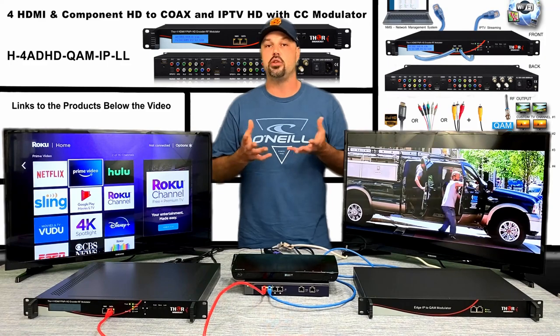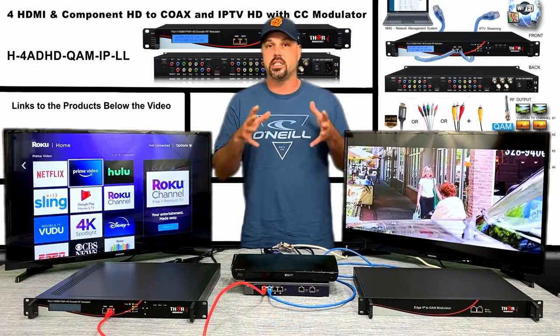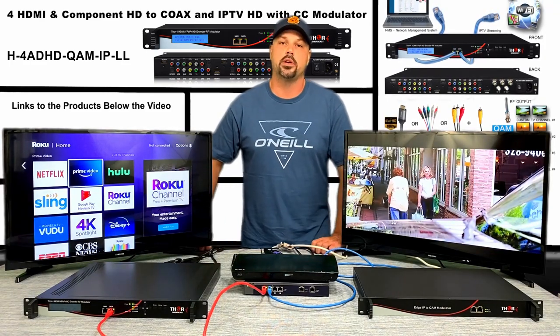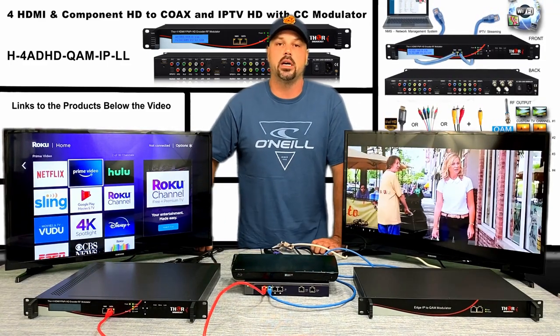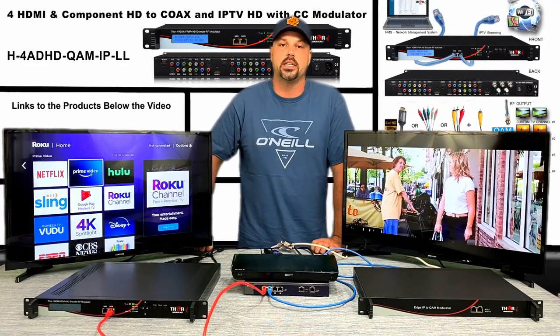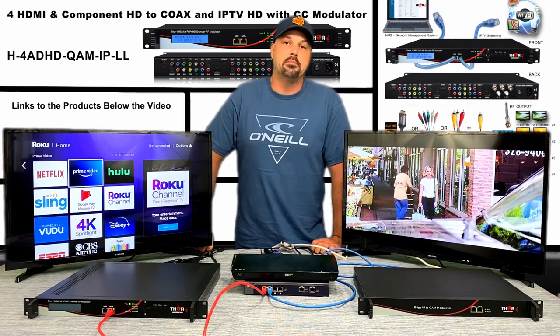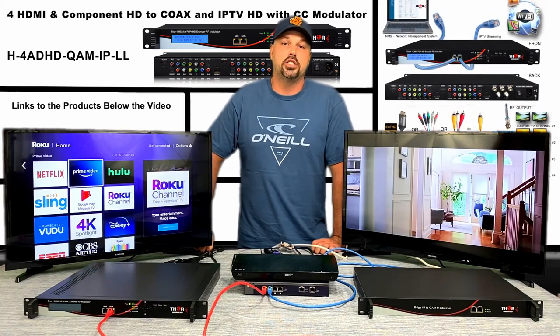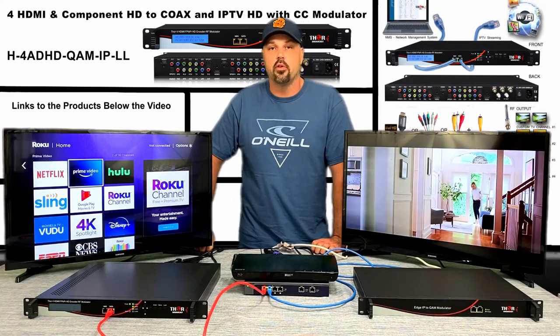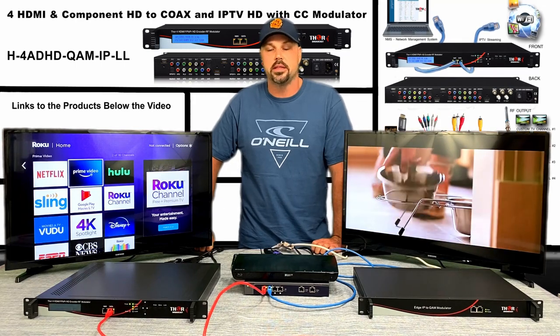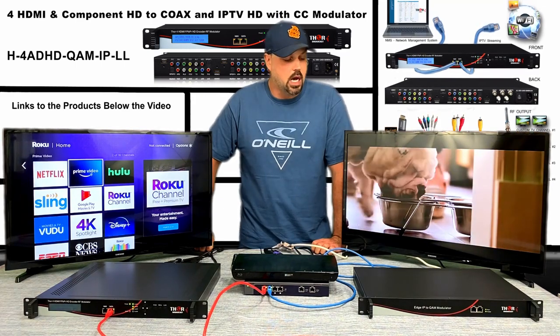The IP edge QAM will take in as many IP channels as you can fit into your 16 QAM pipe. QAM 256 gives you 38 megabits of pipe, and you can put in as many channels or video program transport streams as you like into that pipe.